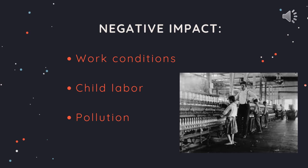Child laborers worked in environments that were unhealthy and dangerous to their physical well-being. Many lost their limbs, were killed in cases of explosion, crushed under machines, and burned. Workers developed lung cancer from poisonous fumes, and when the machines were not harming them, their supervisors were. They were beaten, and when they tried to escape from the factories, they were shackled.